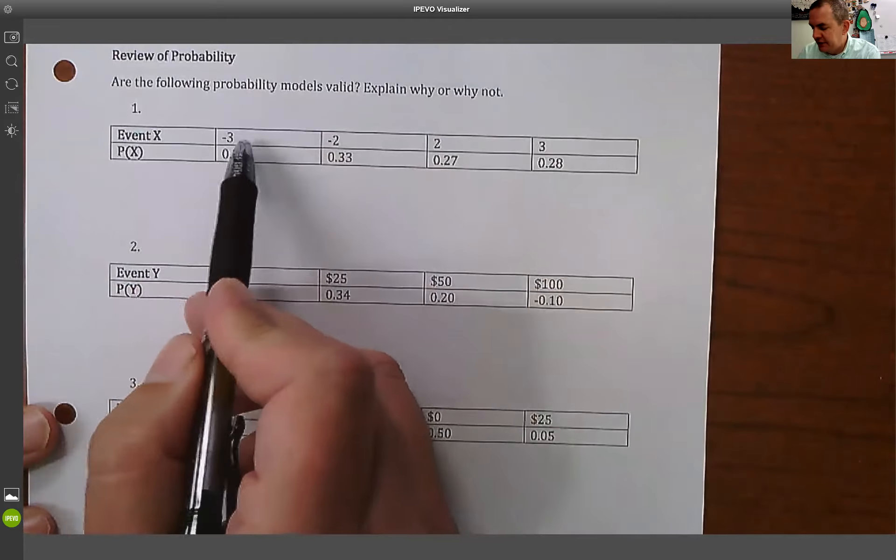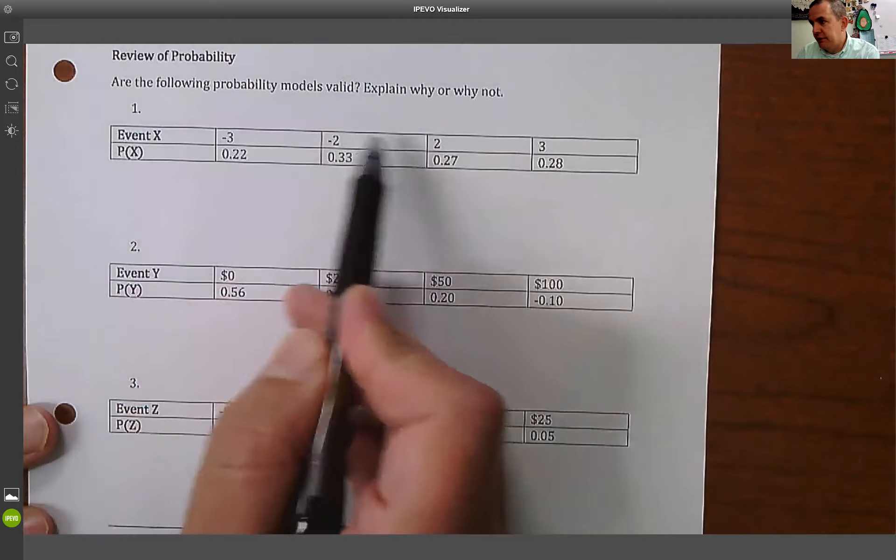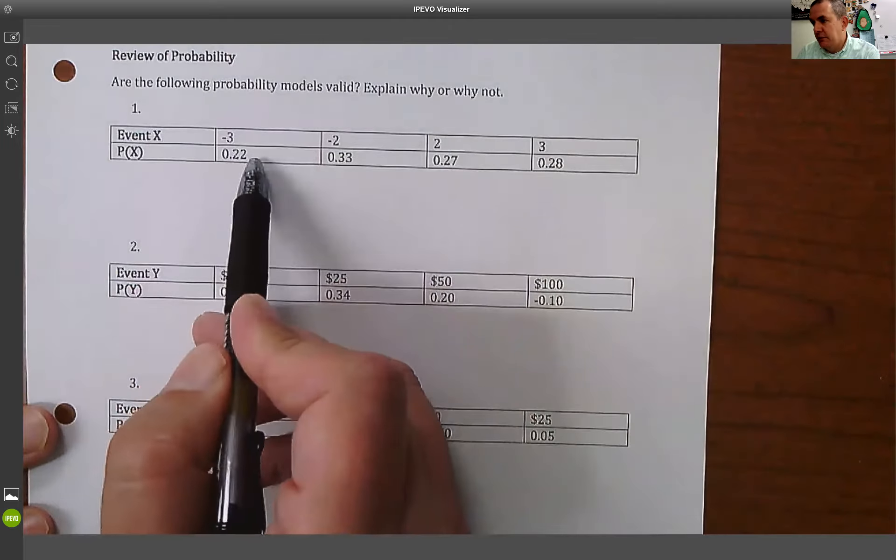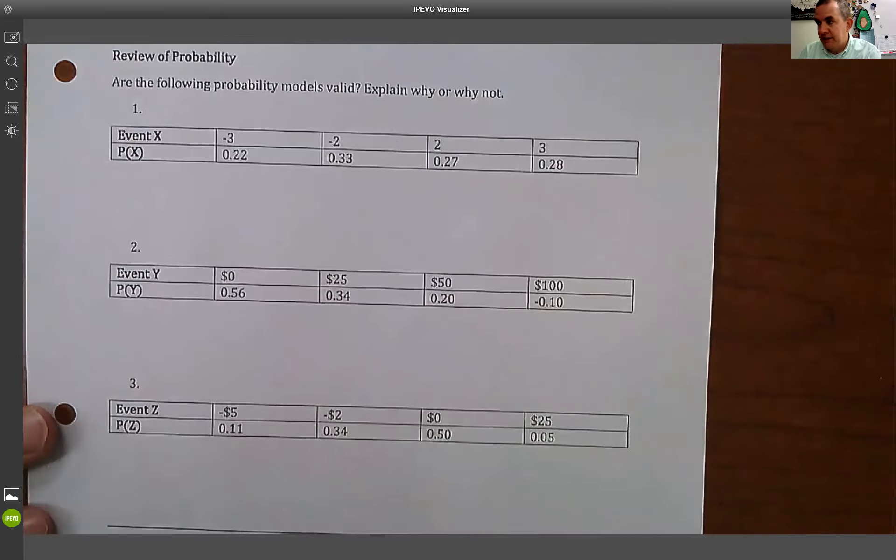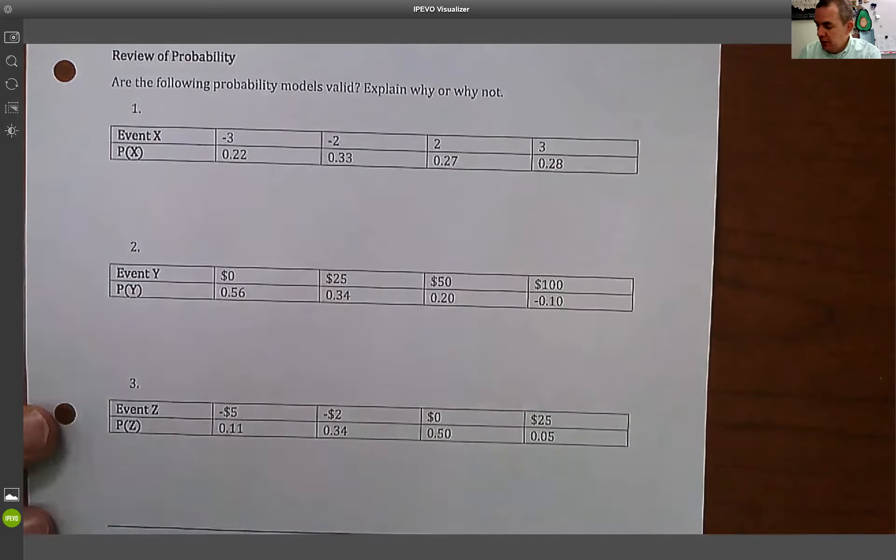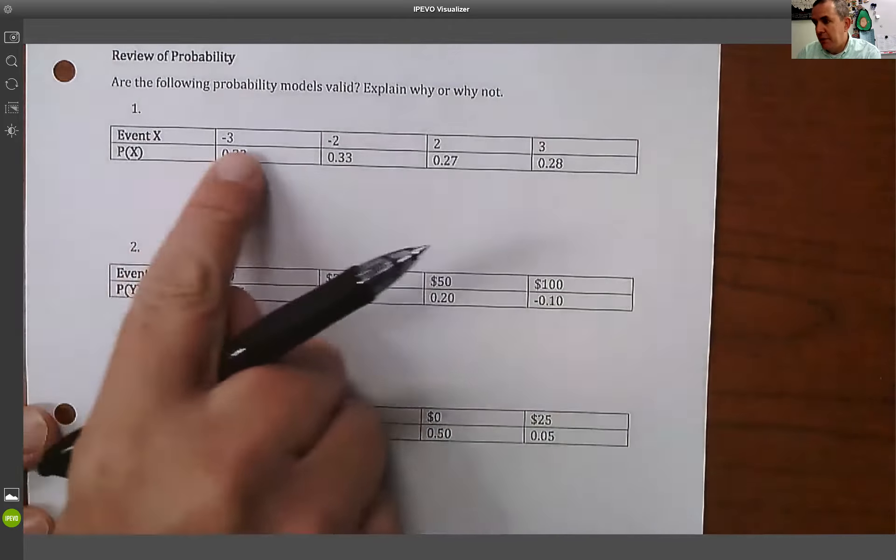This is saying that if X is the result, it's negative 3, negative 2, 2, or 3. The outcomes are 0.22, 0.33, 0.27, 0.28. And it's asking, is this a valid probability model? Well, the rules you need to check are: first, are all the probabilities in here numbers between 0 and 1? So if we look here, all those are probabilities between 0 and 1. So it passes the first check.